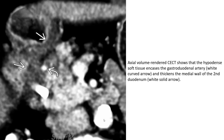Axial volume-rendered contrast-enhanced CT shows high-attenuation soft tissue encasing the gastroduodenal artery — wide solid arrow and wide curved arrow — and thickening of the medial wall of the second duodenum — wide solid arrow — indicating involvement by groove pancreatitis.